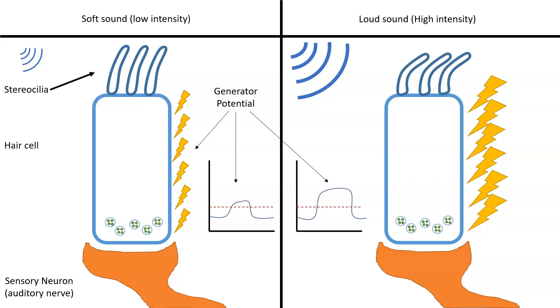Based on what we know, the generator potential will trigger the release of neurotransmitters into the cleft. As you can see here, the soft sound doesn't cause that many neurotransmitters to be released, whereas the loud sound results in a lot of neurotransmitters to be released.